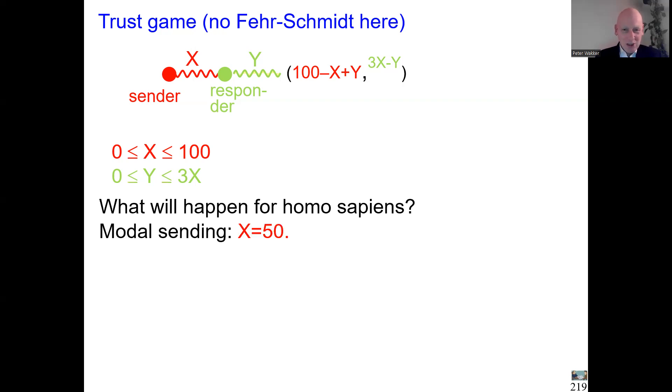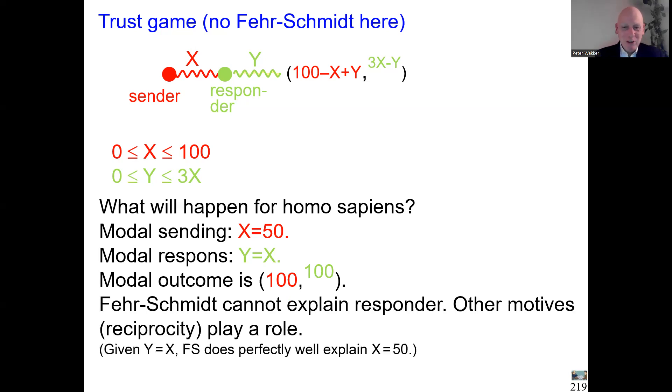But a few observations I will mention. The modal sending is 50. So half of the 100 is sent to the responder. Then that's turned into 150. And then usually the modal response is that the responder sends back 50. So then the end result is that the sender has kept 50, sent 50 to the responder, received back, has 100. The responder received 50, it turns into 150, 50 back, also 100. So 100, 100, and that's fair. The sender did not gain because the sender can also send zero, has 100 for sure. But also the responder takes care that the sender did not lose from this good act of sending money. So this is the modal outcome empirically. And it happens to be that from the fairness perspective, this gives a completely fair outcome. So Fehr-Schmidt might support this, but I told you already, there are many other things going on.